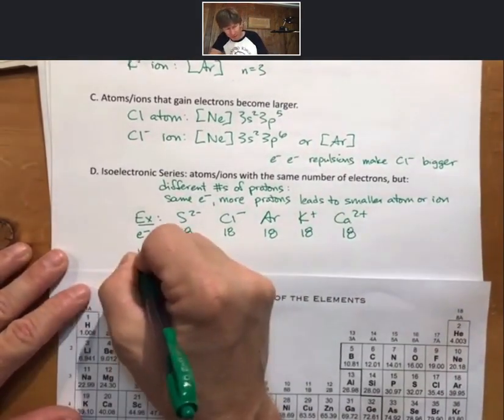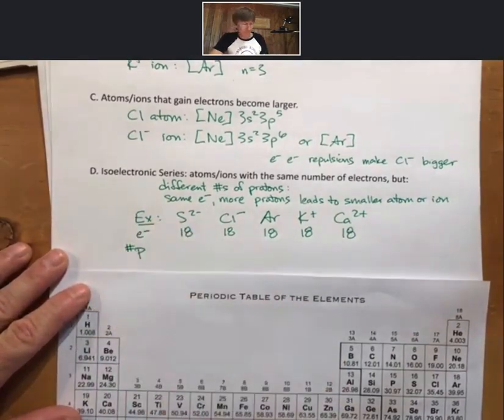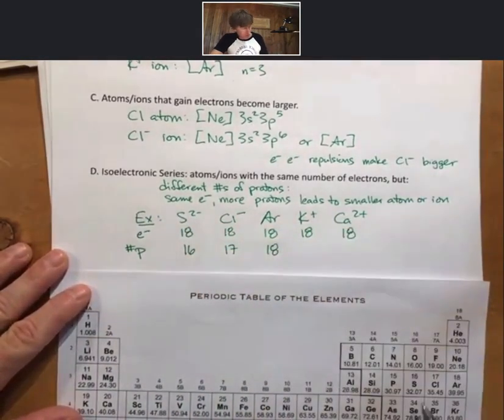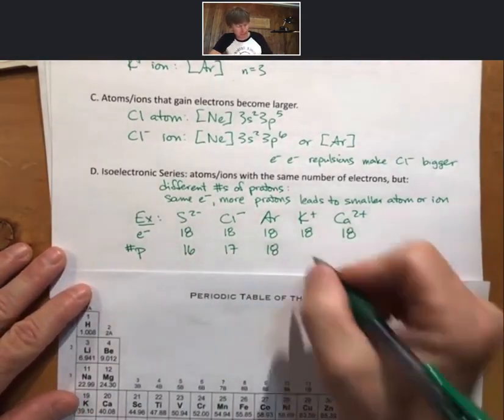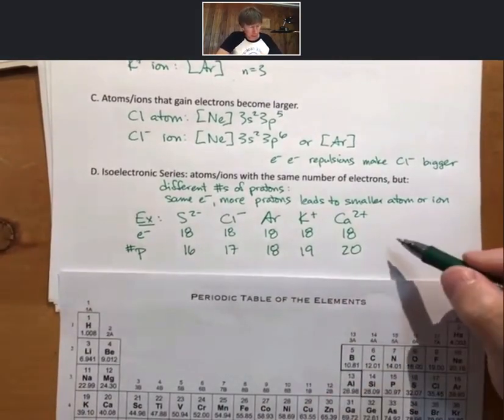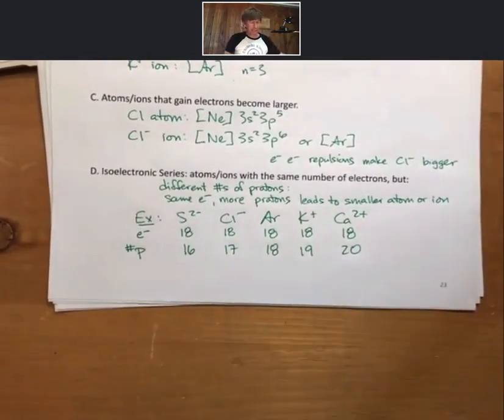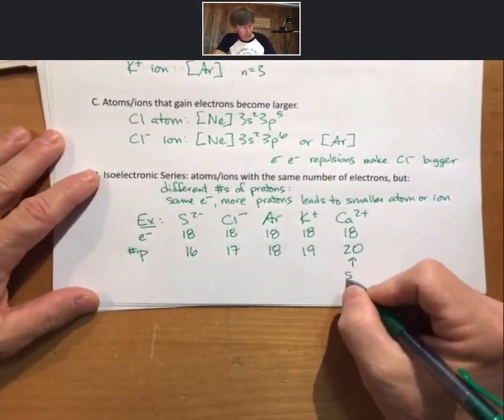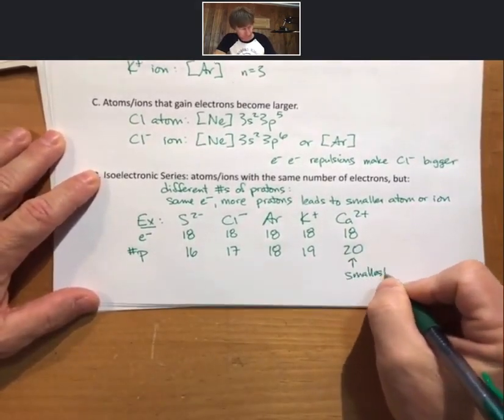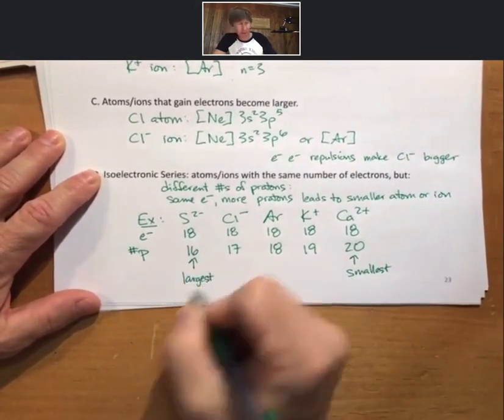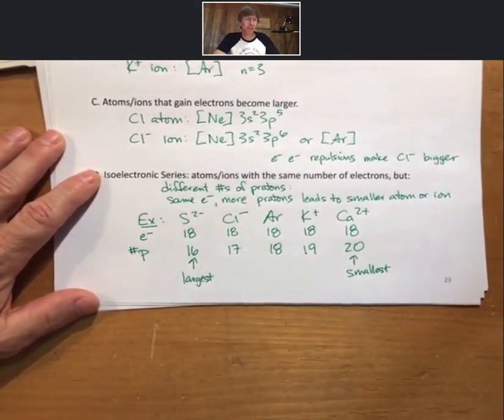For number of protons, well, these are just the atomic numbers or the numbers on top. So among all of these, we would say same number of electrons, most protons, smallest. Largest. That is an isoelectronic series.